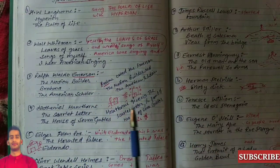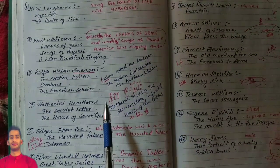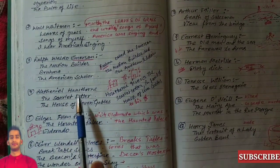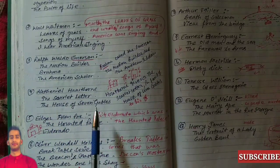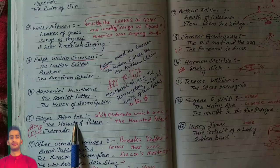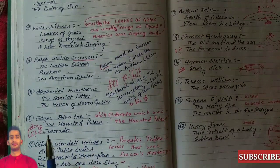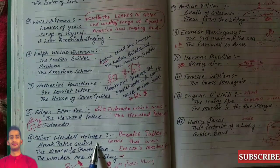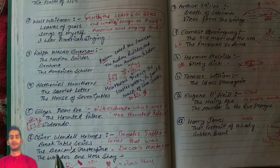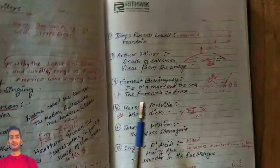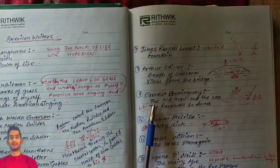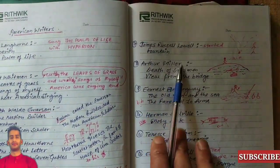I will be telling all shortcuts in the next video. Now, Nathaniel Hawthorne's works: The Scarlet Letter and The House of Seven Gables. Edgar Allan Poe's works: The Haunted Palace and El Dorado. Oliver Wendell Holmes: The Breakfast Table series, The Deacon's Masterpiece, and The Wonderful One-Hoss Shay.